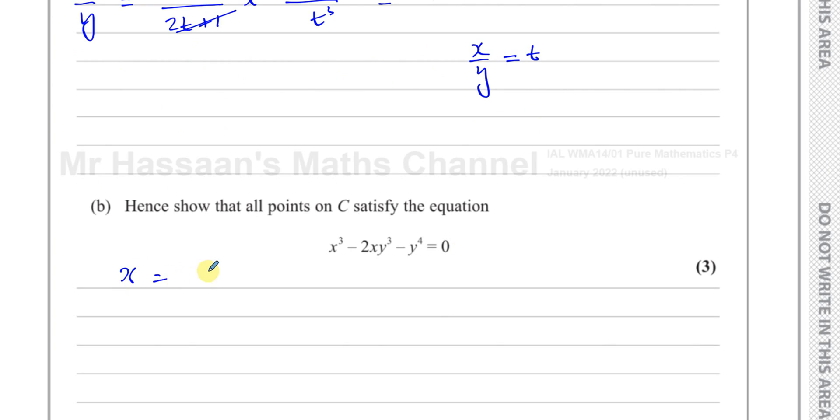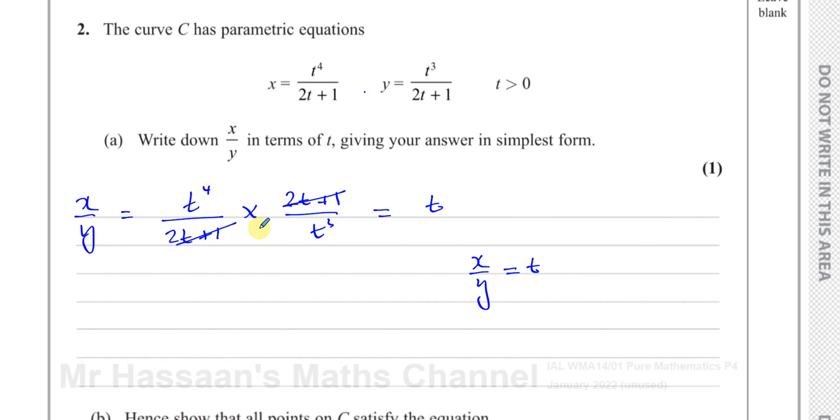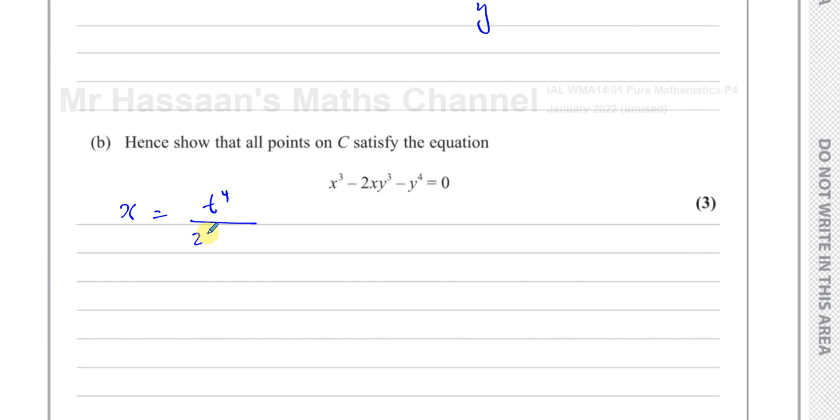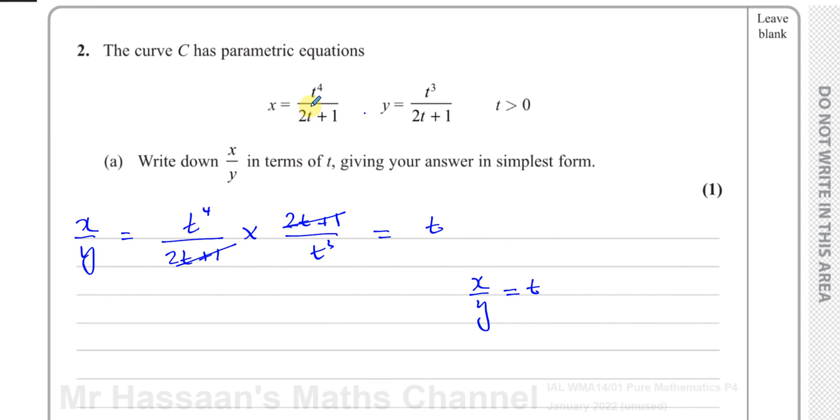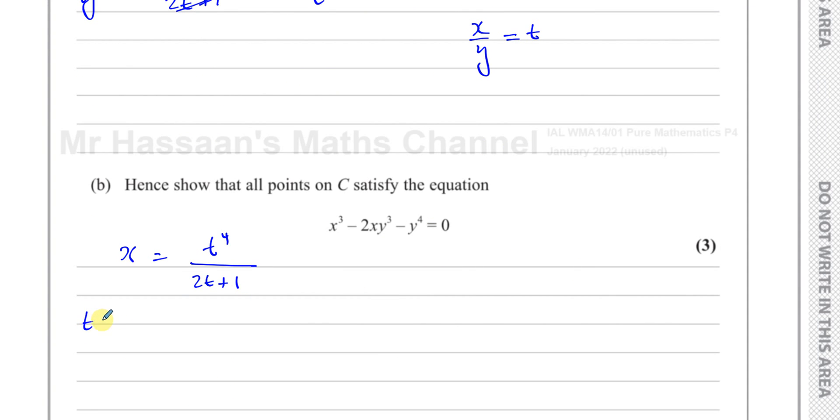Let me take x equals t to the power four over 2t plus one. And we have t equals x over y. So I'm going to replace the t here by x over y and have an equation with just x's and y's in it. So I have x equals that's x over y to the power of four, over two times x over y plus one.